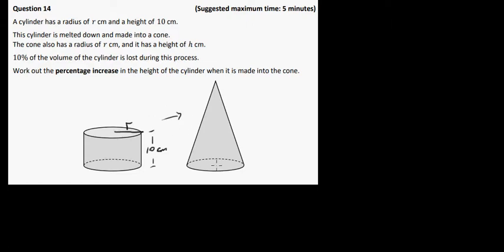Okay, the cylinder is melted down and made into a cone. So it's going to be made into this cone here. The cone also has radius R. So the distance from here to here is also going to be R. And it has height H. So this distance down along here is H. 10% of the volume of the cylinder is lost during this process.